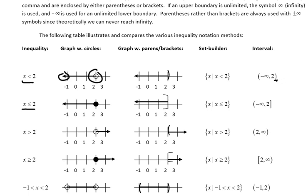With x is less than or equal to 2, again negative infinity, but this time 2 is included, so we put a bracket after the 2. In other words, if I have a strict less than or greater than symbol, I use parentheses. With less than or equal to, or greater than or equal to, I use brackets.